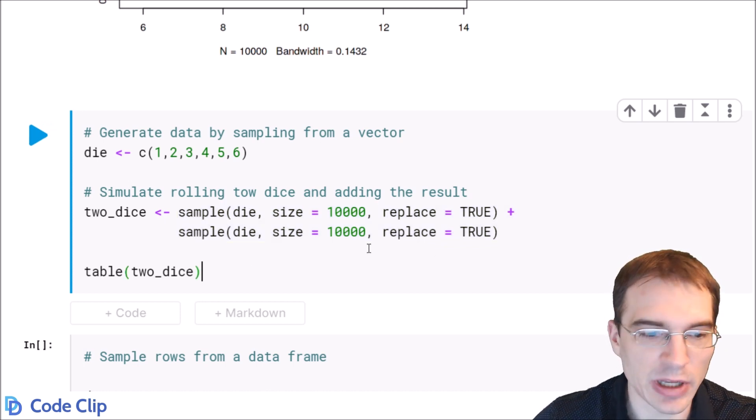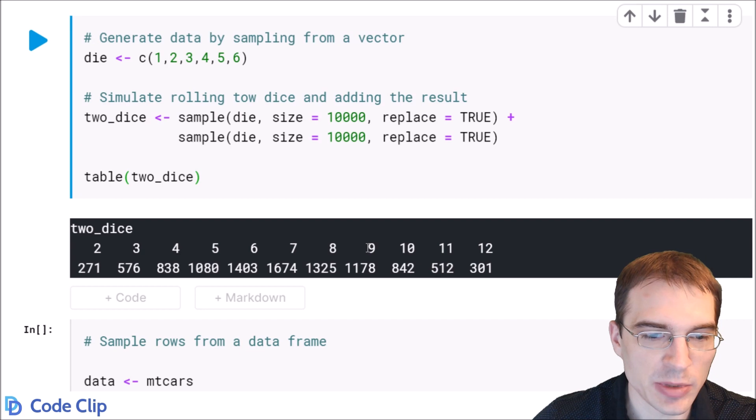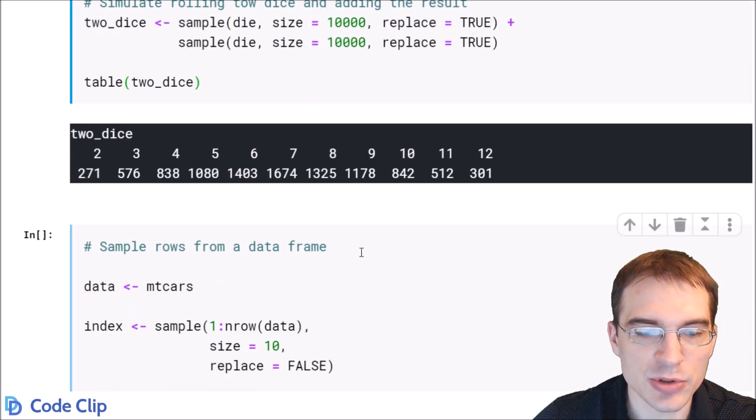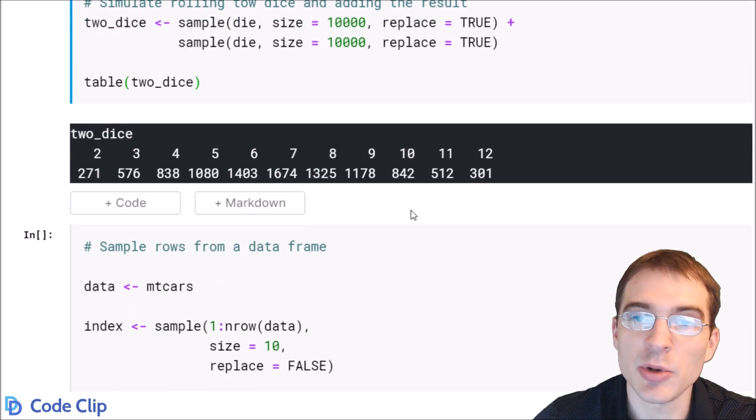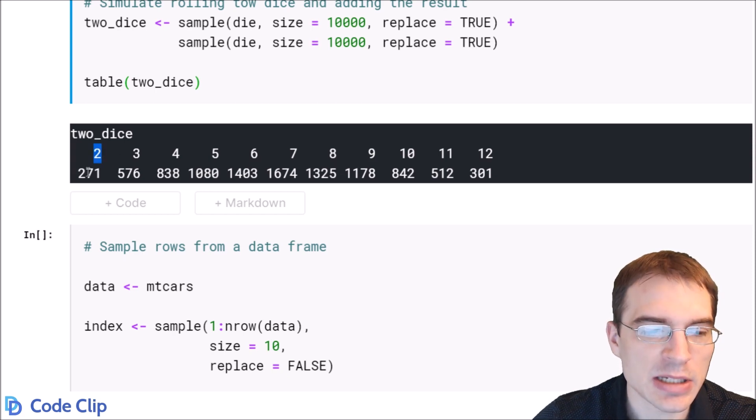And we're just going to make a table of that. So here we've simulated 10,000 die rolls with two dice. And we can see the most common value as we'd expect is 7. And the rare values that only happen around 1/36th of the time as we can see were far less common. So we only got snake eyes 271 times and 12 301 times.